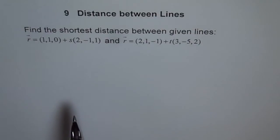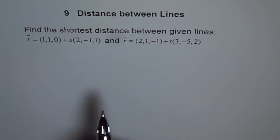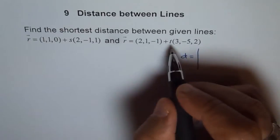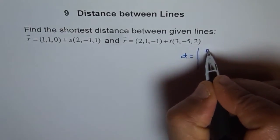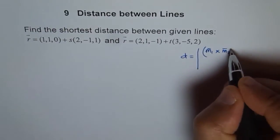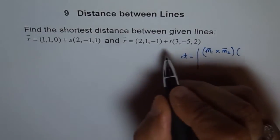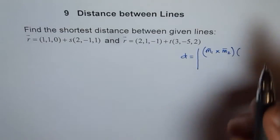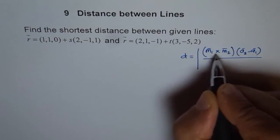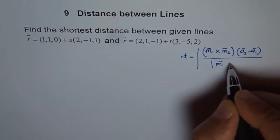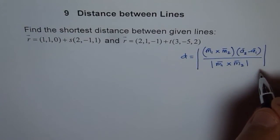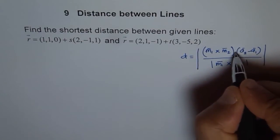As we can see here, the lines are not parallel. So if the lines are not parallel, then the distance between the lines is equal to the absolute value of the cross product of direction vectors M1 and M2, times A2 minus A1, over the magnitude of M1 cross M2. That is the distance between the two lines, with the dot product.